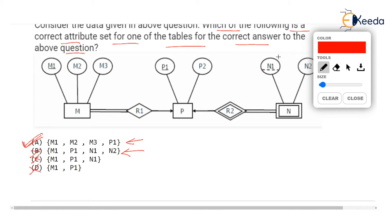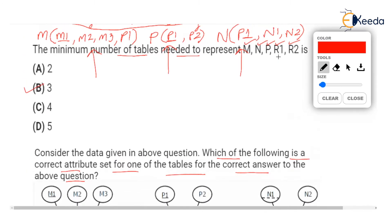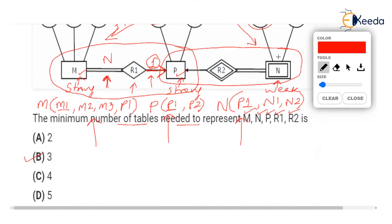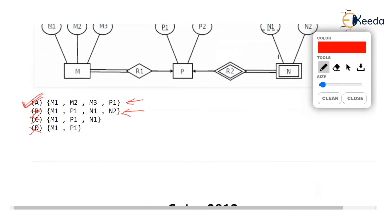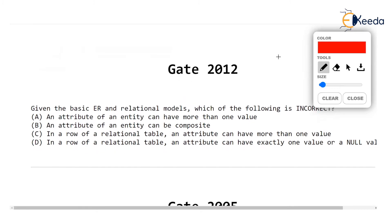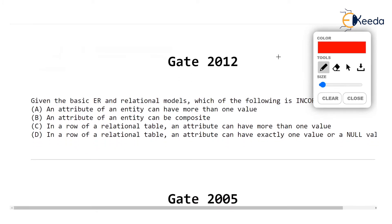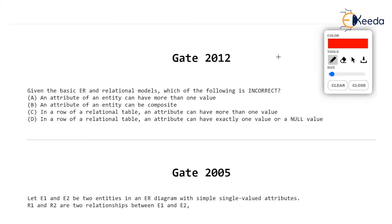You will be able to understand how we got these attributes only if you have patiently watched all the previous videos on ER diagrams, one-to-many, many-to-many, strong and weak entity sets, and converting them into relational model. Now let's see a GATE 2012 question.